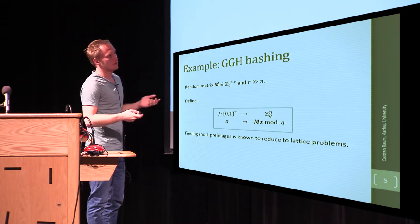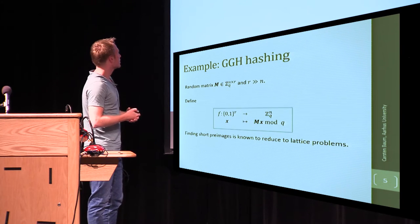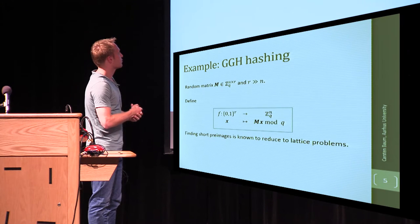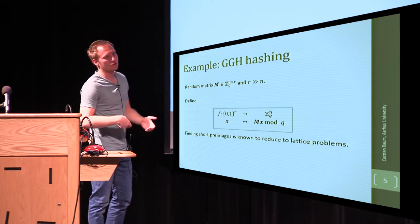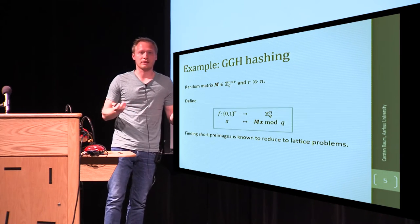And it is known since 1996 that finding short pre-images for this GGH hash function reduces to known lattice problems which we think are hard.